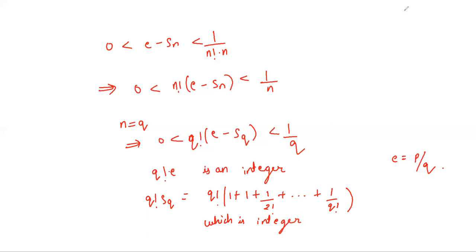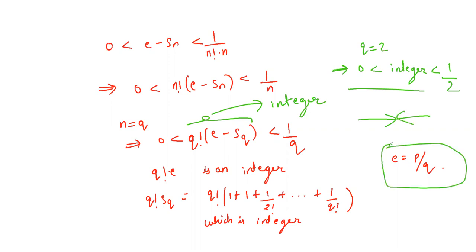So this term is an integer. This is a contradiction since what this implies is that if we take Q equals to 2, this would imply there exists an integer between 0 and 1 by 2 which is a contradiction, and hence our initial assumption that E is rational is wrong.